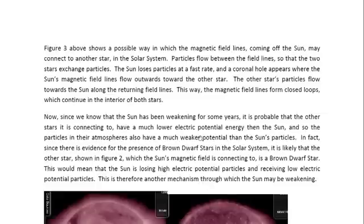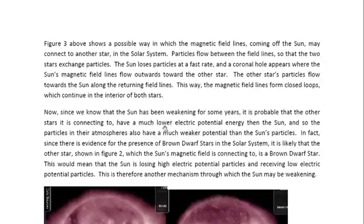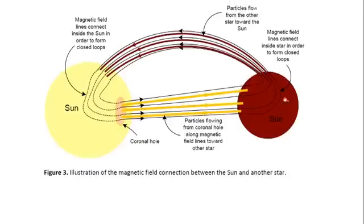Now, the Sun has been weakening for years. And this suggests that it is being drained by objects that have a lower electric potential energy than the Sun. So that would mean that the particles flowing from the Sun have a higher electric potential energy than the particles that are returning back to the Sun from the other star. So what we have is another possible mechanism through which these stars are draining the Sun and rejuvenating by gaining energy. They lose their low energy particles to the Sun and they gain high energy particles back from the Sun.